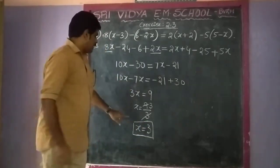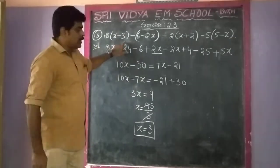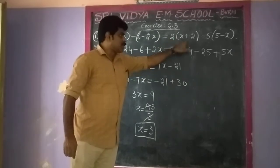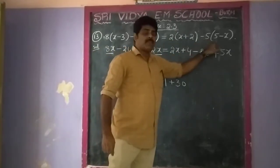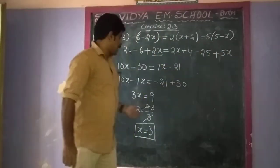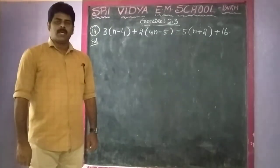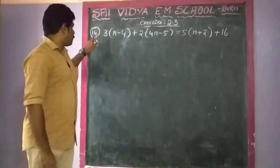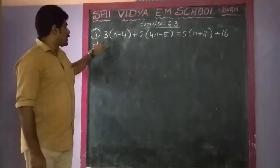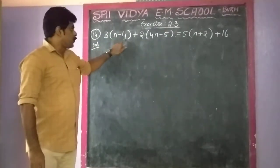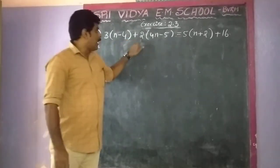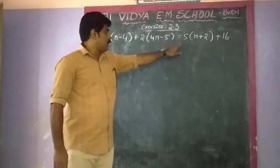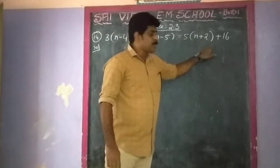The value of x: 8(x minus 3) minus (6 minus 2x) equals 2(x plus 2) minus 5(5 minus x), and x is equal to 3. In Exercise 2.3, the last sum — Sum 14 — is: 3 of (n minus 4) plus 2 of (4n minus 5) is equal to 5 of (n plus 2) plus 60.